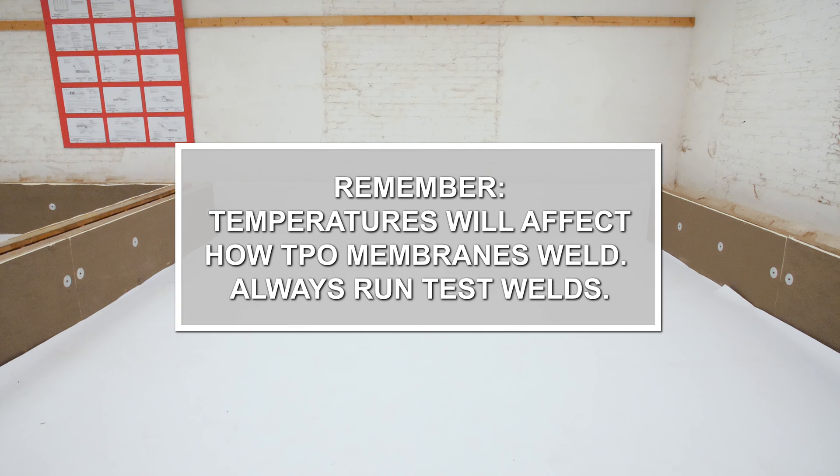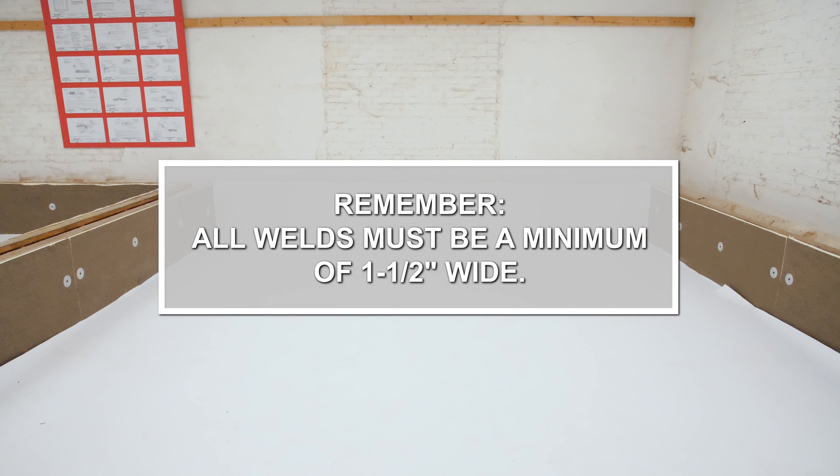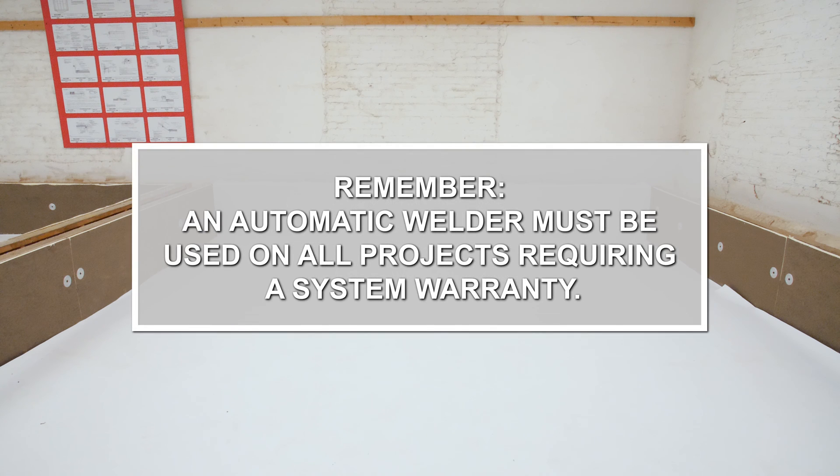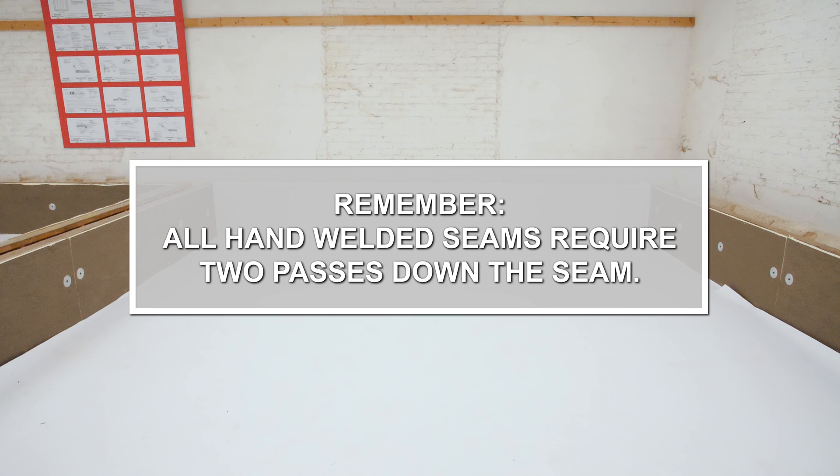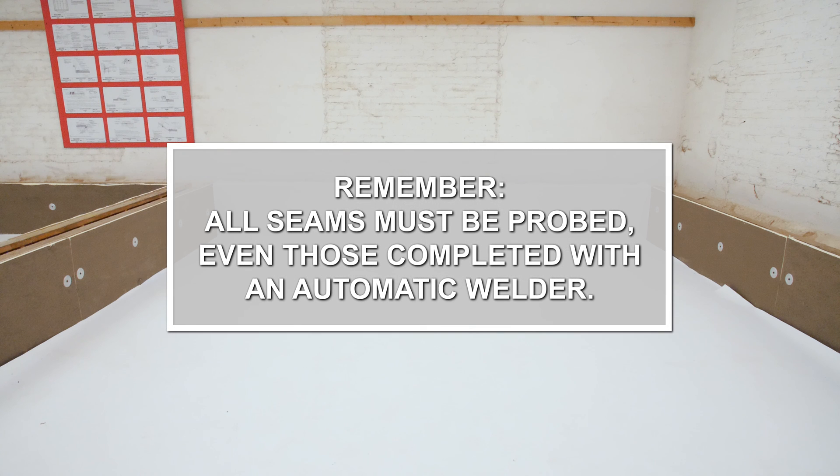Things to remember: temperatures will affect how TPO membranes weld. Always run test welds. All welds must be a minimum of 1.5 inches wide. An automatic welder must be used on all projects requiring a system warranty. All hand welded seams require two passes down the seam. All seams must be probed, even those completed with an automatic welder.